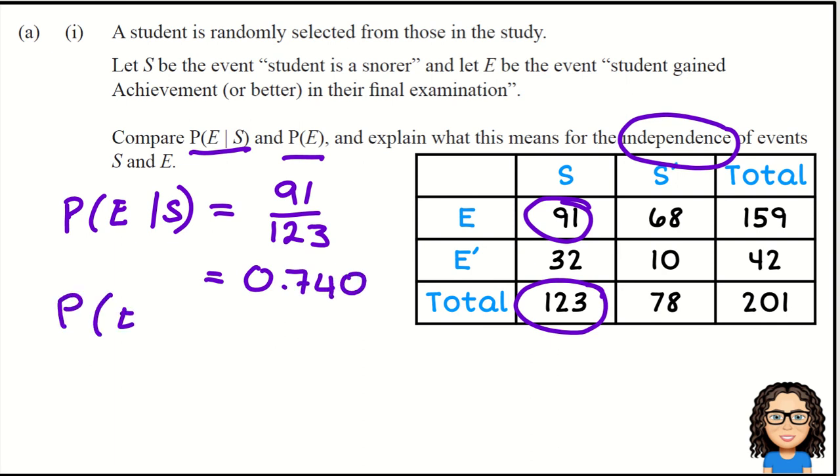Now I'm going to look at the probability of achieving overall. In total, we had 159 students achieving out of the total of 201 students. The probability of achieving is 159 out of 201. If I turn that into a decimal, that gives me a value of 0.791.